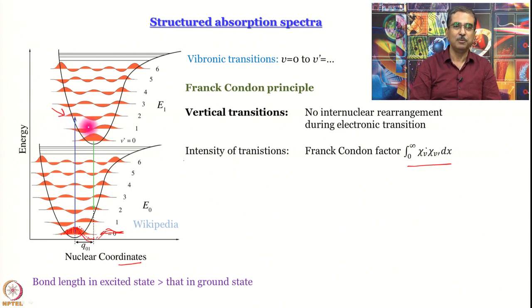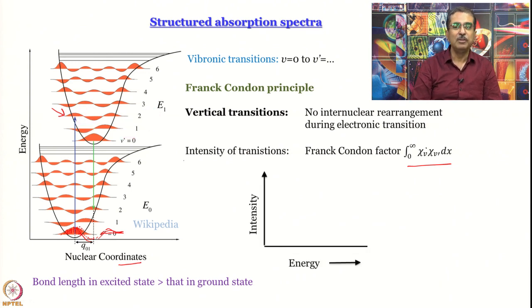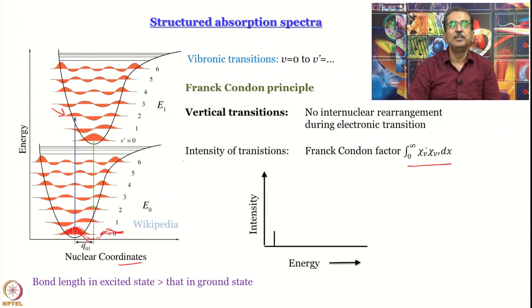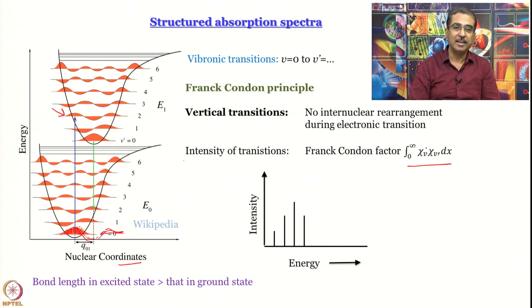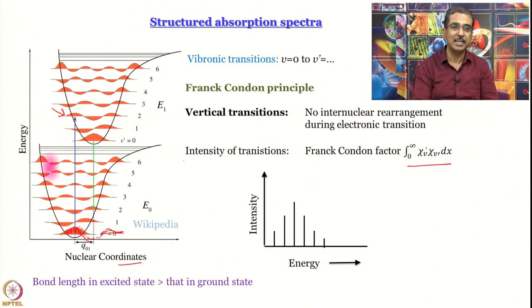If you remember the absorption spectrum of benzene, it does go through a maximum — this is exactly the situation for benzene. Of course benzene is a polyatomic molecule, so the nuclear coordinate is not simply an internuclear separation. The 0→0' transition has a name: it is called the band origin. If there were no vibronic structure — a pure electronic transition — the only transition you would see is 0→0'. That is the smallest energy vibronic band you can hope to observe. Sometimes its intensity is so small that you do not even see it.